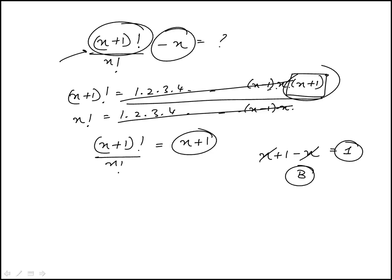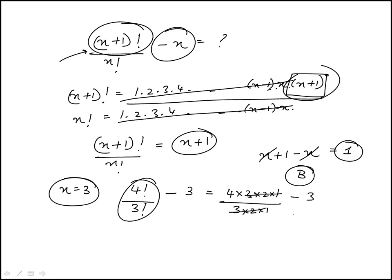You could certainly use numbers here. I'd probably use n equal to 3, a little bit larger number. So this would be 4 factorial over 3 factorial minus 3. 4 factorial over 3 factorial, this would be 4, 3, 2, 1. 3, 2, 1. This is 4 minus 3 is 1.